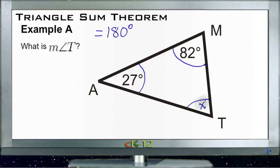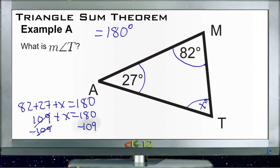So that tells us that 82 degrees and 27 degrees and x degrees must total 180. We just need to add those together: 82 plus 27 plus x equals 180. We solve for x: 82 and 27 is 109, 109 plus x equals 180, subtract 109 from both sides, and we get x equals 71 degrees.